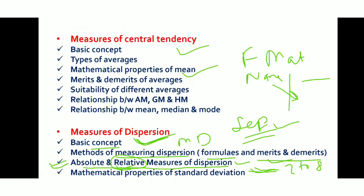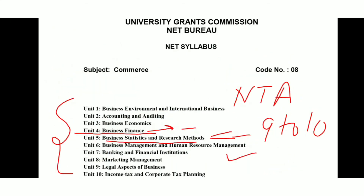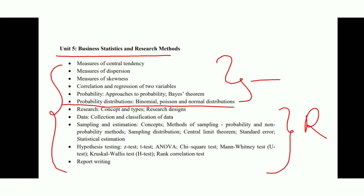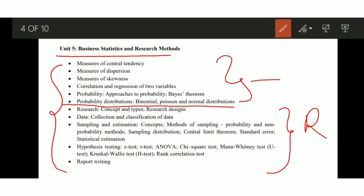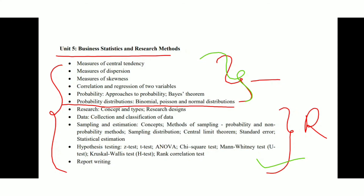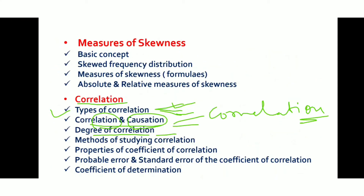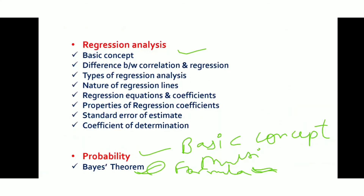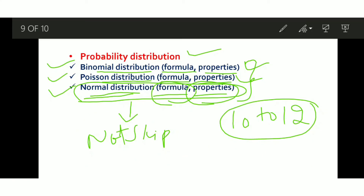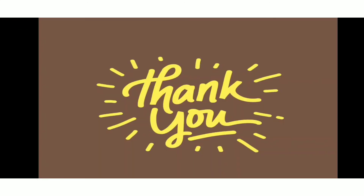So these are the important topics from Unit 5 — Business Statistics and Research Methods. We have only covered the Business Statistics part here; Research Methods topics will be discussed in the next video, Part 2. If you have skipped any topic in your preparation, make sure to cover it — all of these are important for the exam. If you liked the video, please like and share it with your friends. Keep learning, and thank you so much!